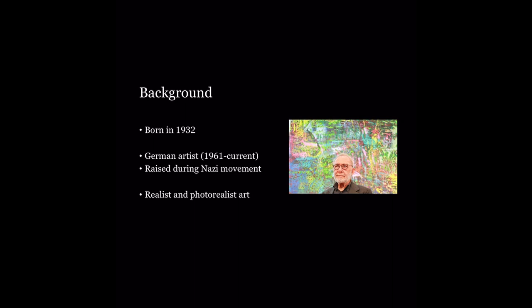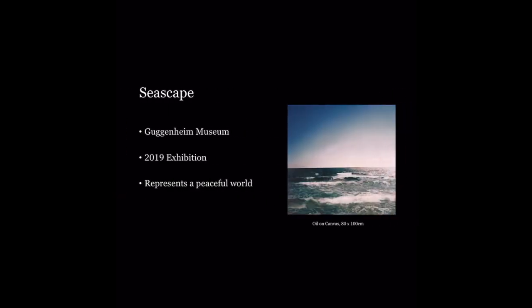The first work is titled Seascape, which was on display at the Guggenheim Museum. Seascape was part of a 2019 exhibition by Richer in which he displayed images of an ocean scene. This image creates a peaceful and scenic atmosphere, which Richer was attempting to create despite the chaotic and violent environment he lived in growing up in Nazi Germany. In this photo we can see the sky aligning with the ocean, creating a photorealist image.